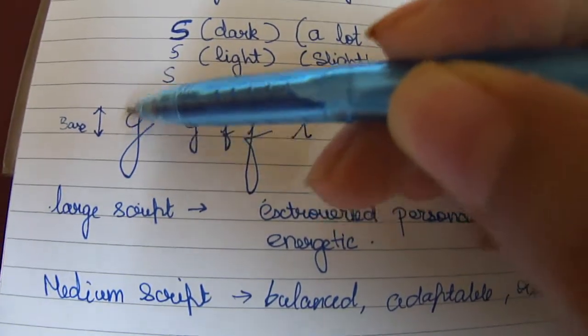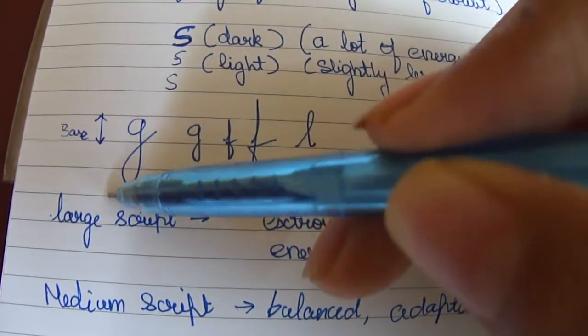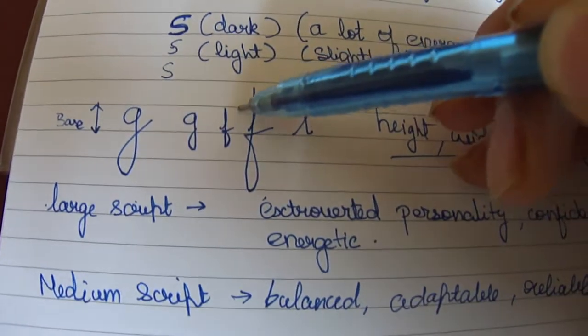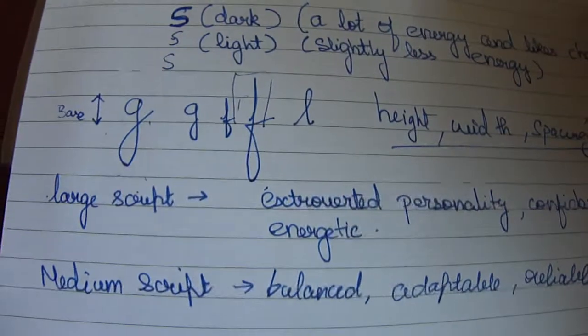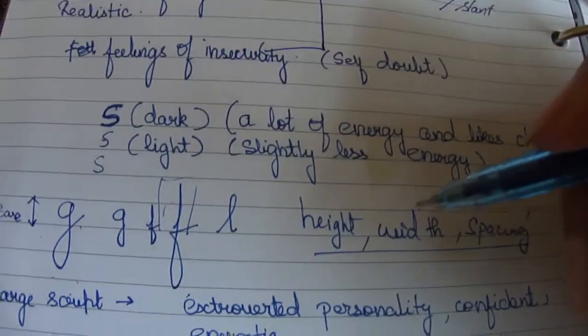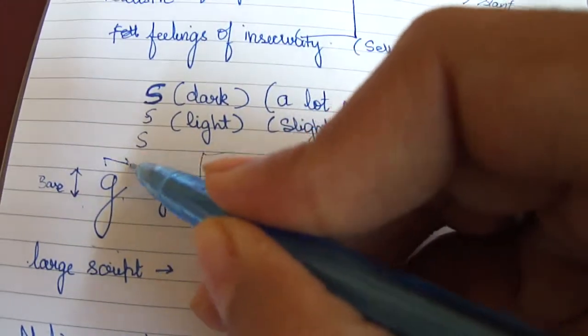Suppose you take this as the base block, and then you see it deviates this much here but deviates this much here. Using that, you comparatively say whether the height is more or less. Then you go for the width of the letter. This is the width of the letter.